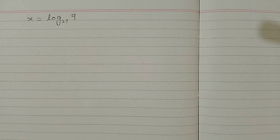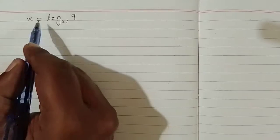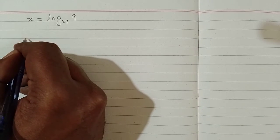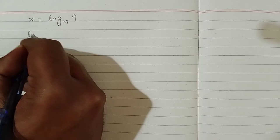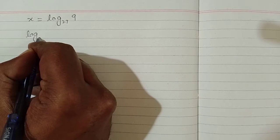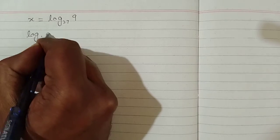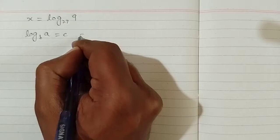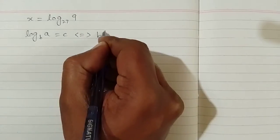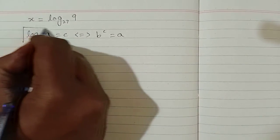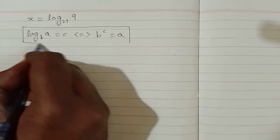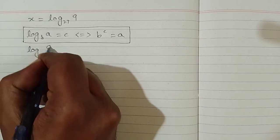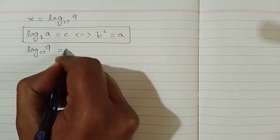In this video we will solve a logarithmic equation: x is equal to log of 9 base 27. By the definition of log, log of a base b is equal to c can be written as b raised to the power c is equal to a. We have log of 9 base 27 is equal to x.